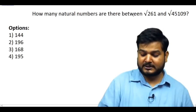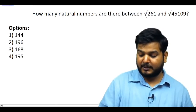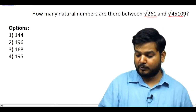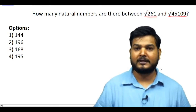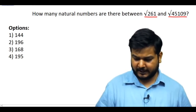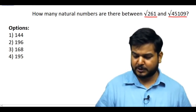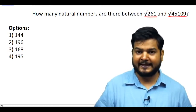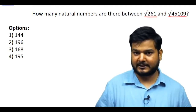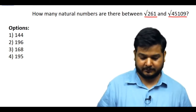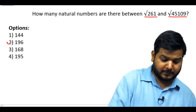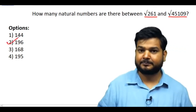How many natural numbers are there between √261 and √45109? The ideal time for this question is not more than 20 seconds, and the answer is 196.